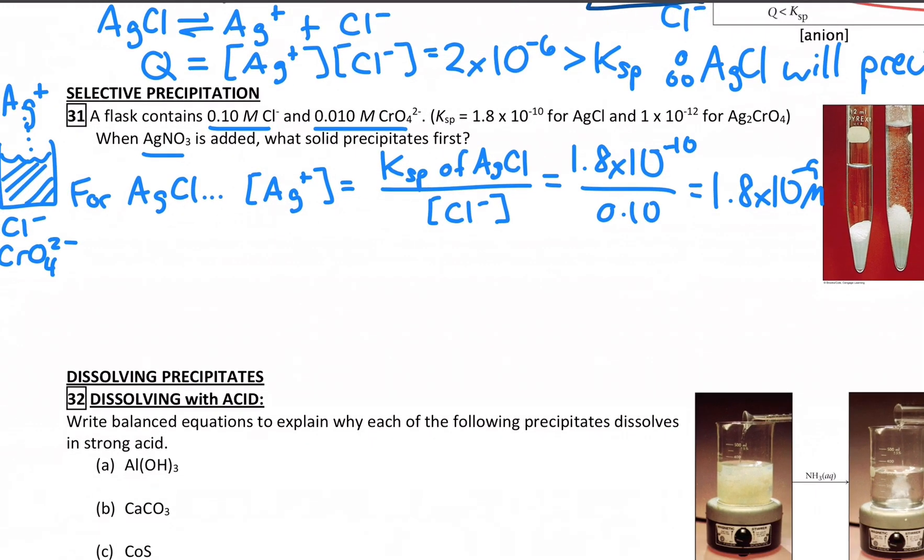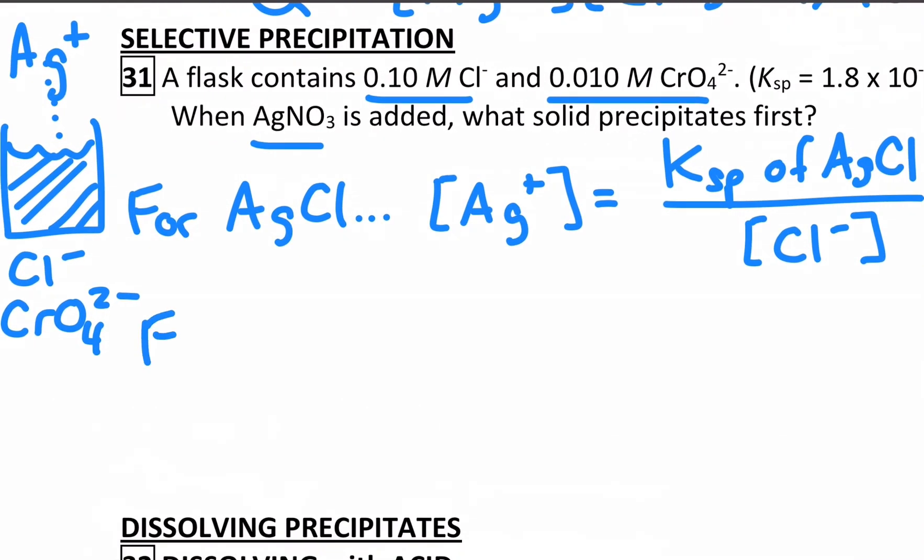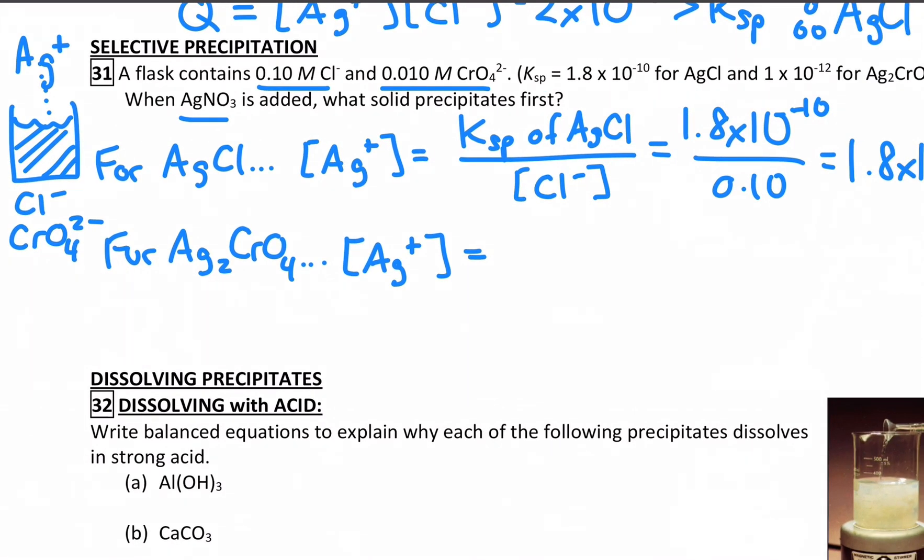And what I'd like you to do is hit pause and try to do the same thing, except for the other possible product, which would be silver chromate, which is Ag2CrO4. How could you calculate the silver ion concentration needed to form a precipitate of that?